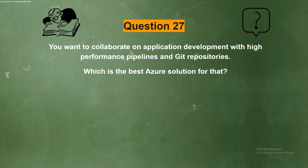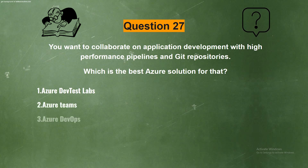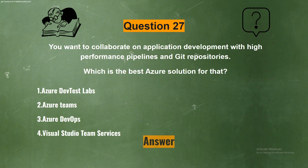Question 27. You want to collaborate on application development with high-performance pipelines and Git repositories. Which is the best Azure solution for that? The options are: Option 1, Azure DevTest Labs; Option 2, Azure Teams; Option 3, Azure DevOps; Option 4, Visual Studio Team Services. The correct answer is Option 3, Azure DevOps.